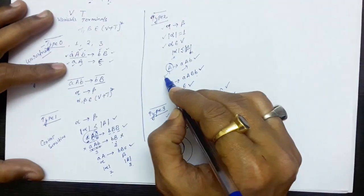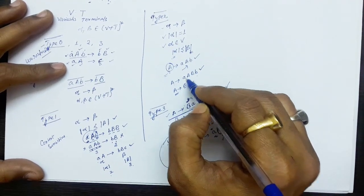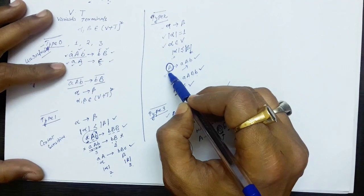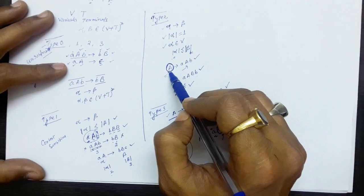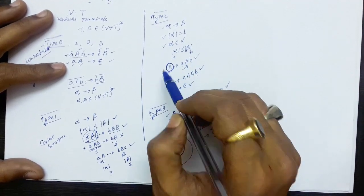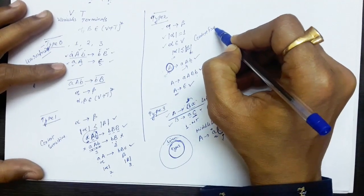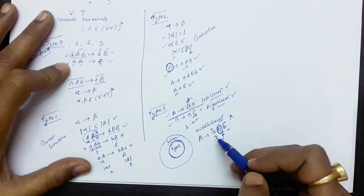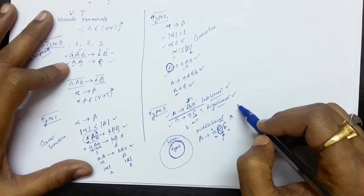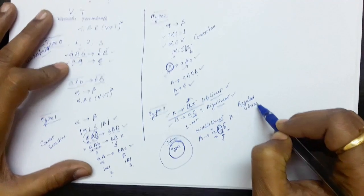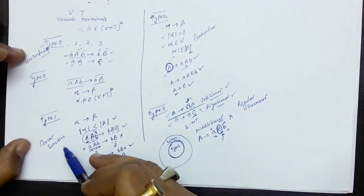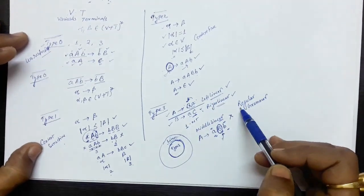Type 2 grammar, where a production like A produces aAb or A produces aABb has only one symbol on the left hand side, means we are not applying any context. If we find A anywhere, it can be reduced without looking at the surrounding context. That is why type 2 grammars are called context free grammars. Type 3 grammar, which must be left linear or right linear, is also known as regular grammar. So type 0 is unrestricted, type 1 is context sensitive, type 2 is context free, and type 3 is regular grammar.